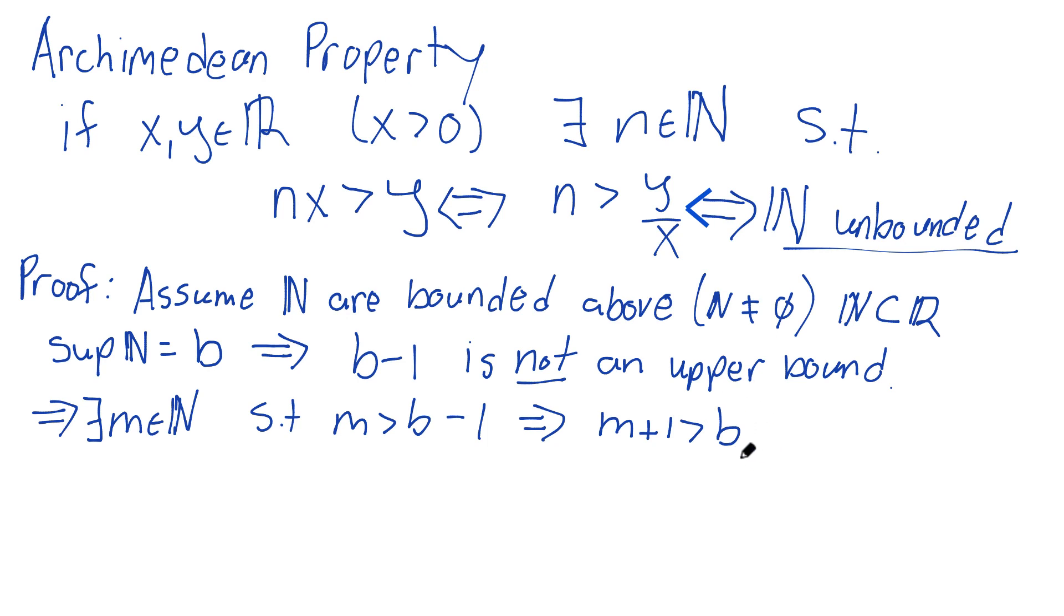B is the supremum of N. It's the least upper bound. But m plus one is in N, isn't it? Isn't m plus one an element of N? Why is that?